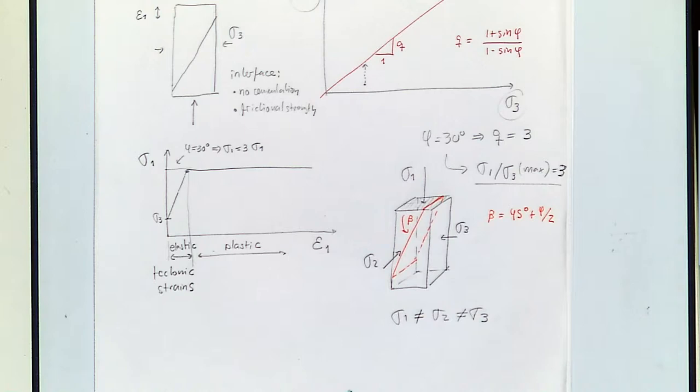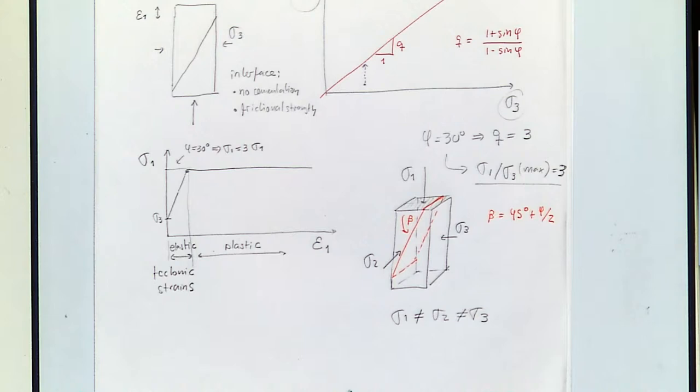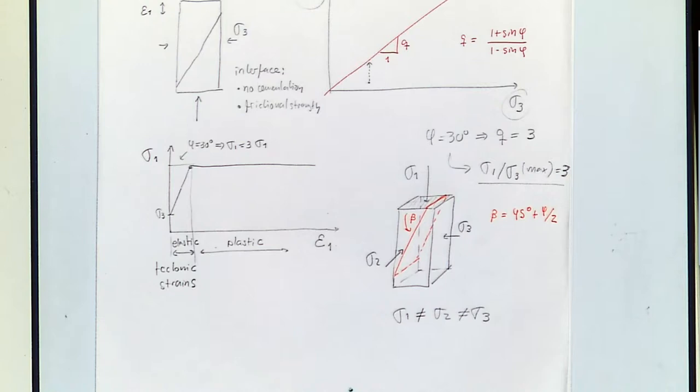Question: for the diagram on the left, when sigma 1 is constant — no longer increasing — the strain means the length of the rock is not changing, it's just moving with respect to the other block, right? Yes. Just moving with respect to the other one. It might compress a little, but the overall movement is the block moving with respect to the other part.